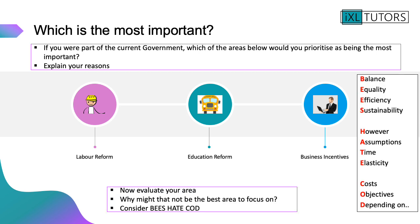Now you should have your ranking. You're going to evaluate your chosen area — whatever you've chosen as most important. Why is that the best idea? Now think about the opposite side of the argument: why might that not be the best area to focus on? Think about balance, quality, efficiency, and sustainability. What assumptions have you made? What will happen in the long term versus the short term — is the impact going to be different? Think about the elasticity of the aggregate demand curve. Are there any other costs, including opportunity costs? Does it counterbalance with any other government objectives? And what does the success of your policy depend on?